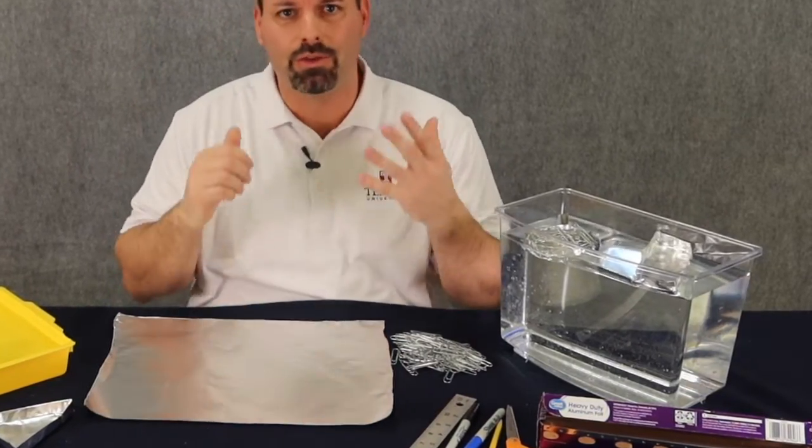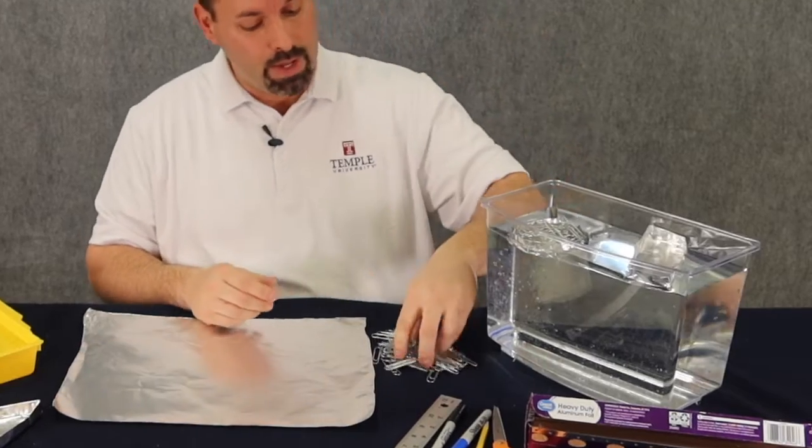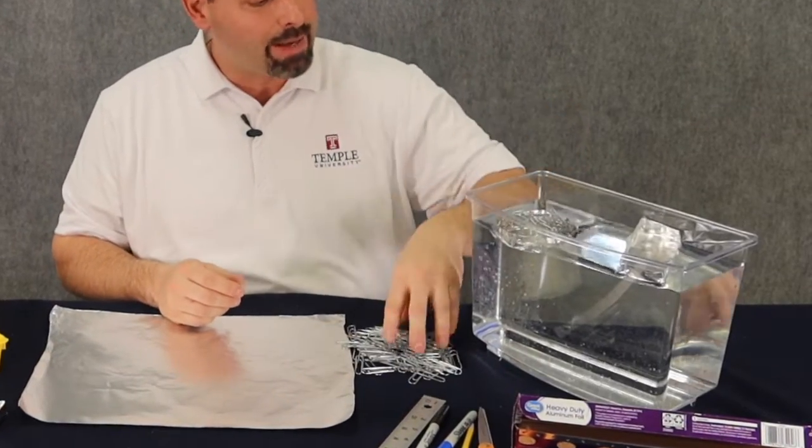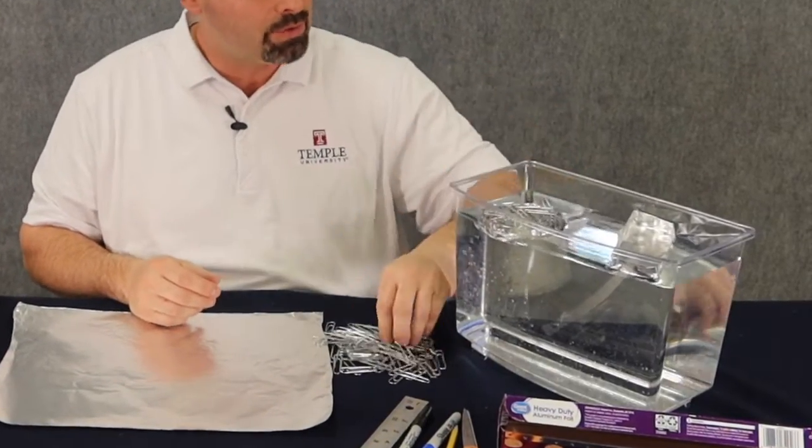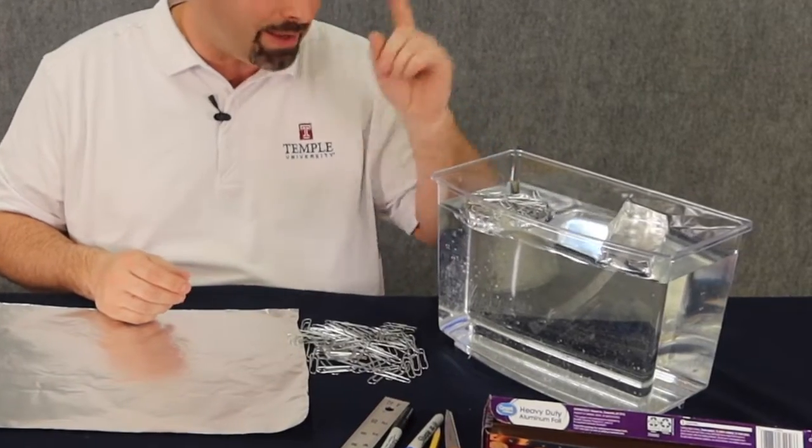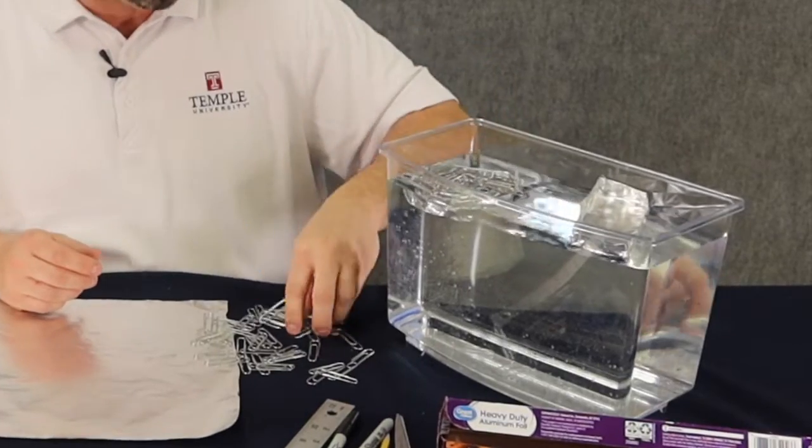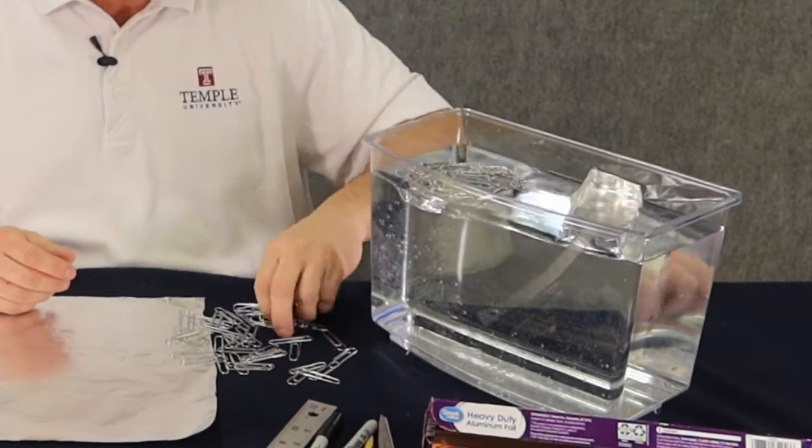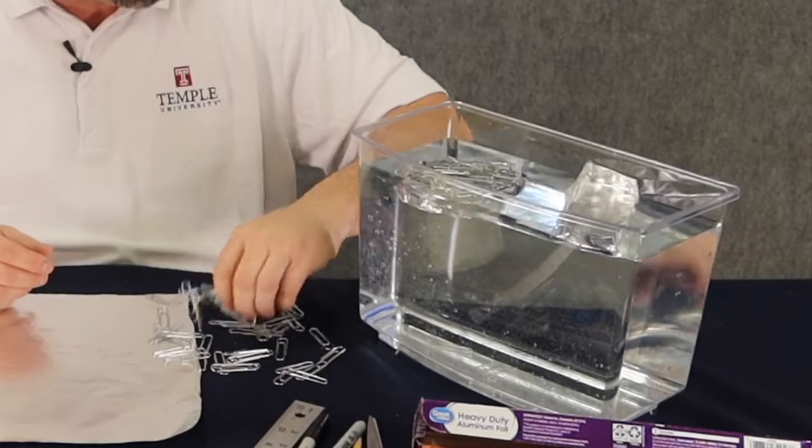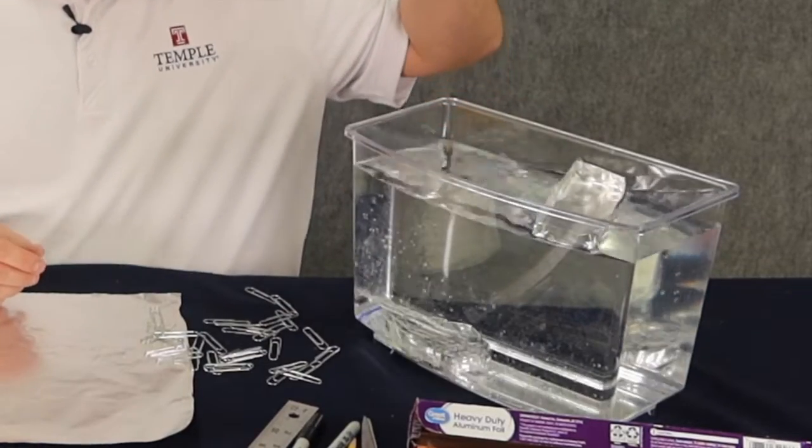Now you could use pennies, you could use marbles, you could use paper clips, and then you would just simply keep adding paper clips or pennies or marbles to your boat, keeping track by counting until your boat eventually sinks. You can see my boat's doing a pretty good job. It's almost ready to sink.